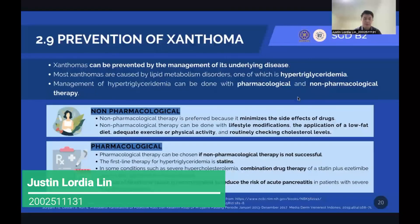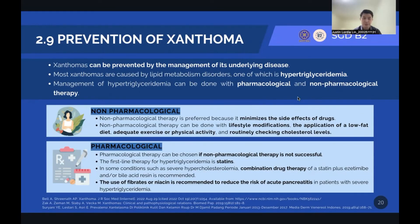Hello, my name is Justin Lordialin. I'm going to talk about the prevention of Xanthoma. Xanthomas can be prevented by managing the underlying disease. Most Xanthomas are caused by lipid metabolism disorders, one of which is hypertriglyceridemia. Managing hypertriglyceridemia can prevent Xanthoma. Non-pharmacological therapy is preferred in the prevention of Xanthoma because it is safer and minimizes drug side effects. Non-pharmacological approaches such as lifestyle modification, application of a low-fat diet, adequate exercise or physical activity, and routinely checking cholesterol levels are preferred.